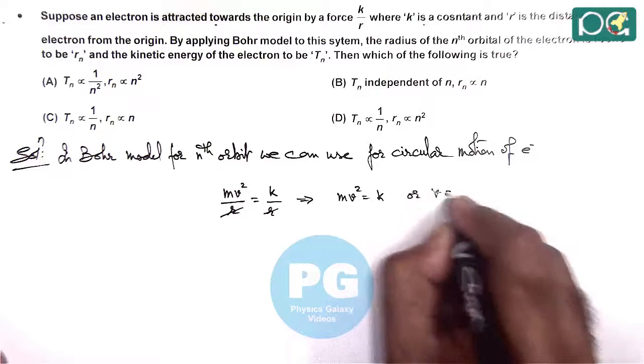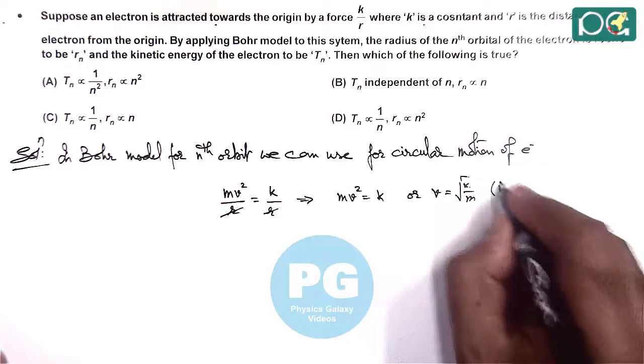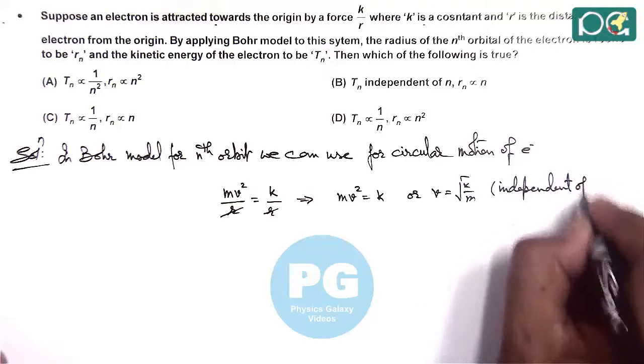Or we can write v is equal to √(k/m), which is independent of n.